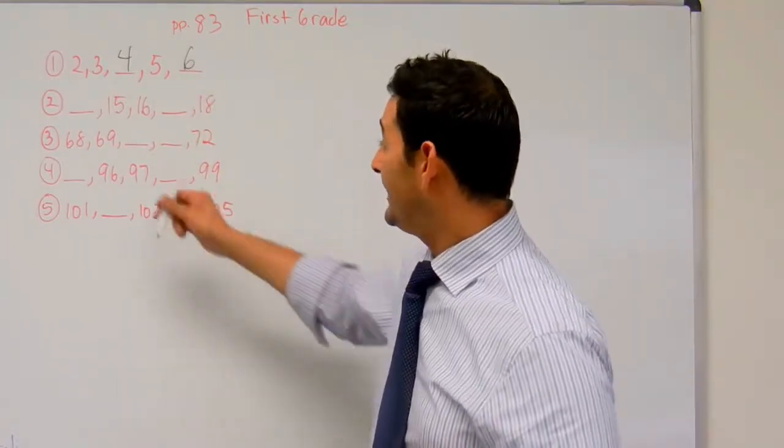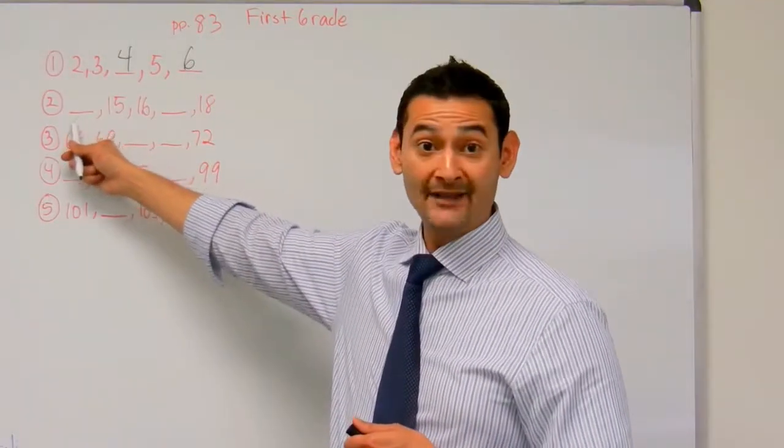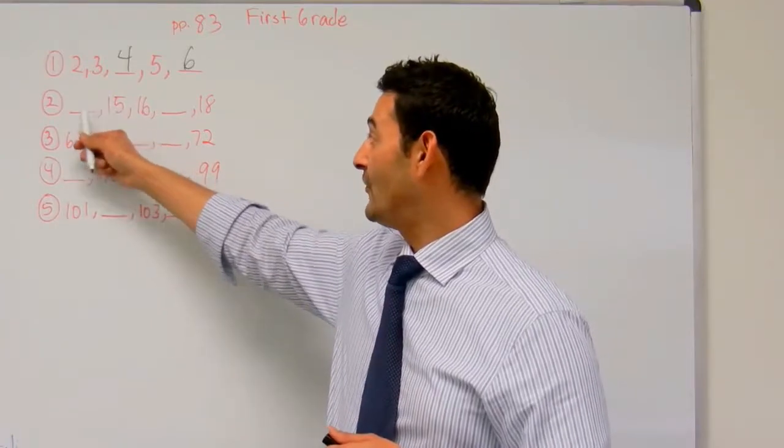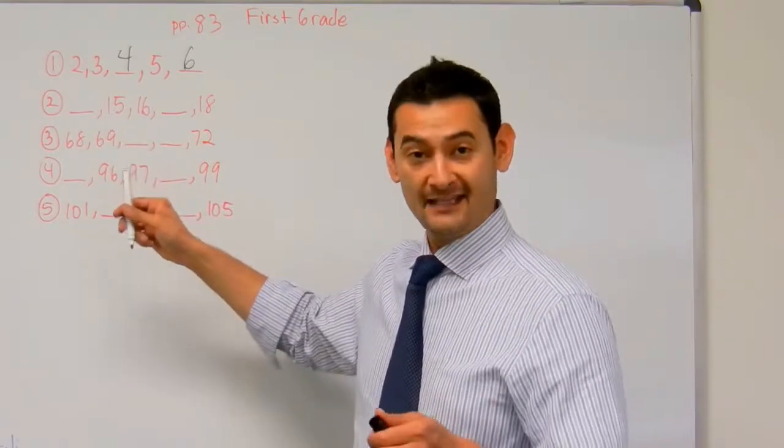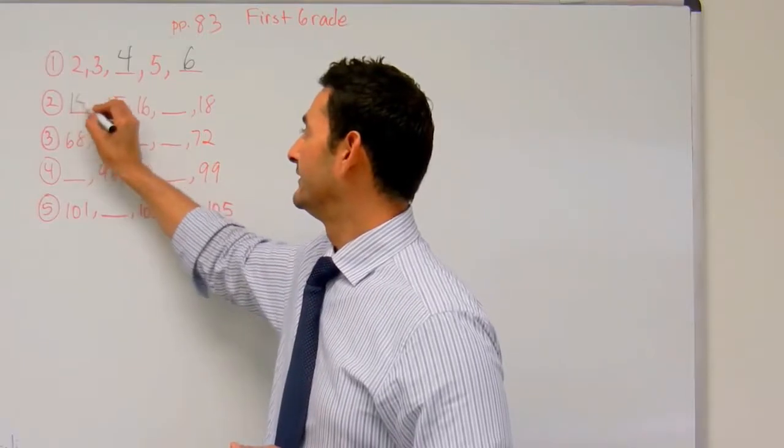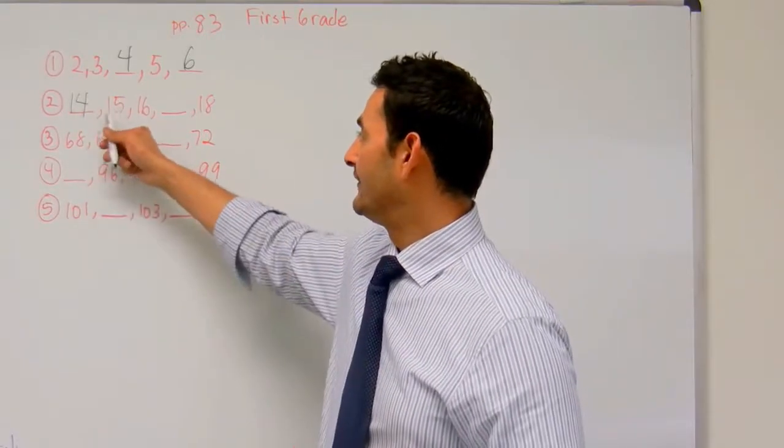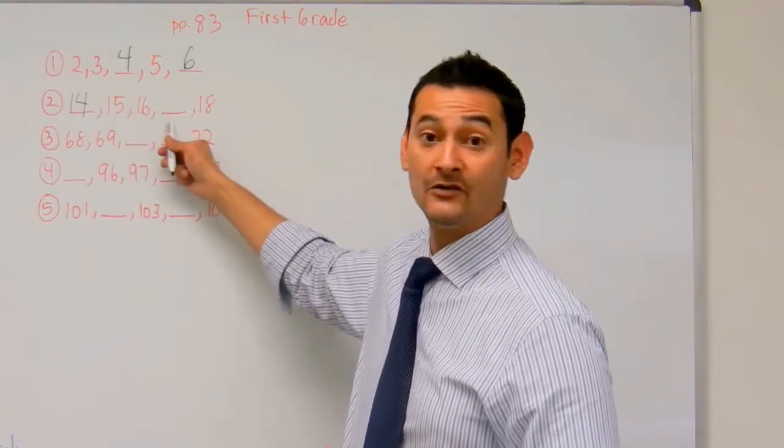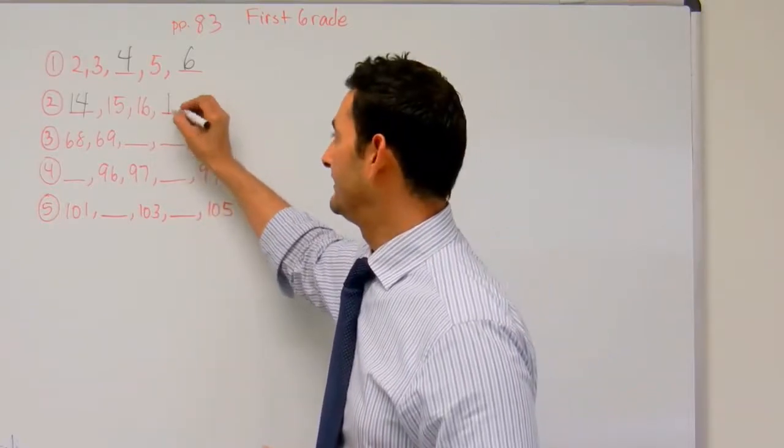There you go. Now here we have a blank, so what number goes before 15? That's correct, it's 14. And now we're going to count: 14, 15, 16, what number goes there? 17. That's right.